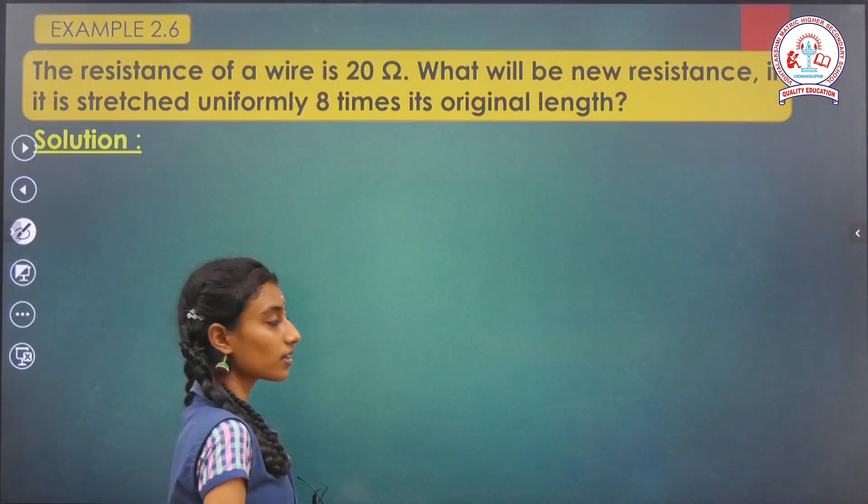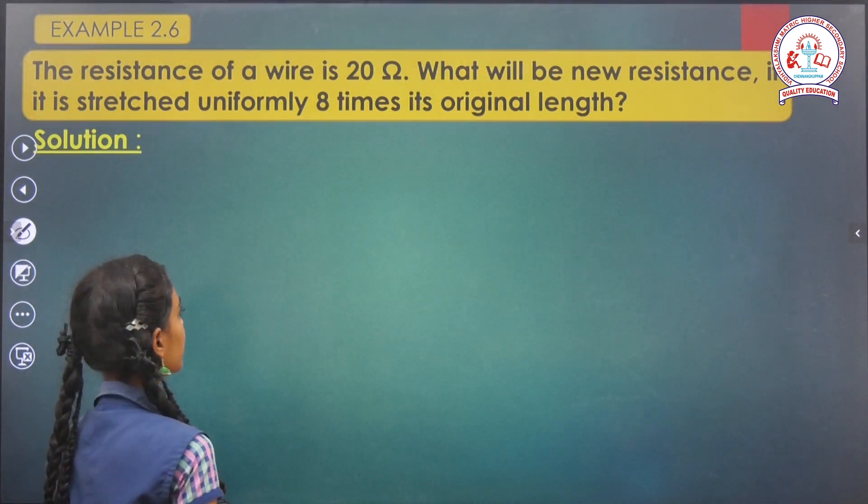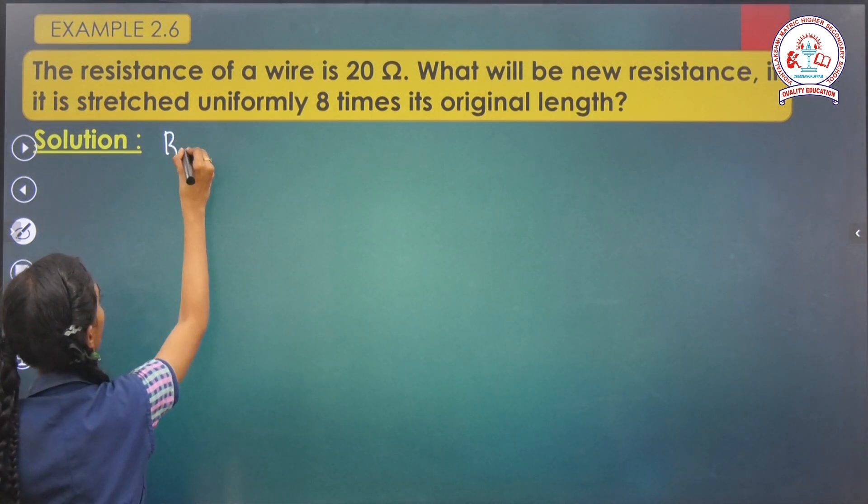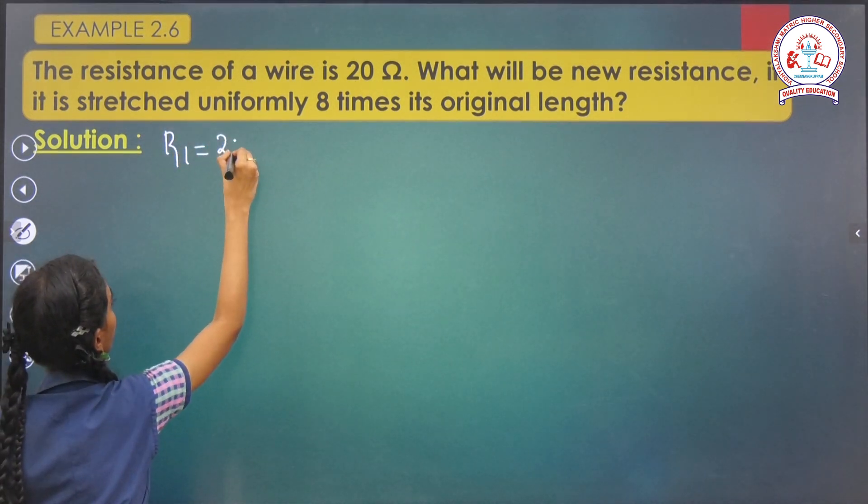The first question is example 2.6. The resistance of a wire is 20 ohms, so R1 equals 20 ohms.